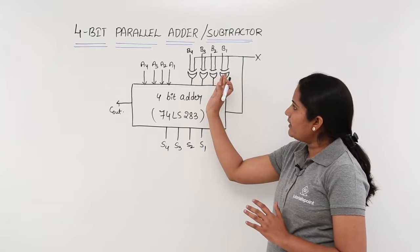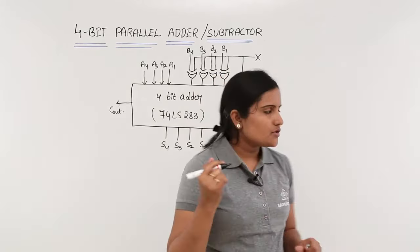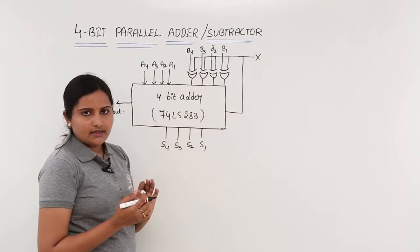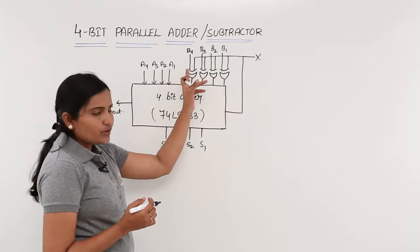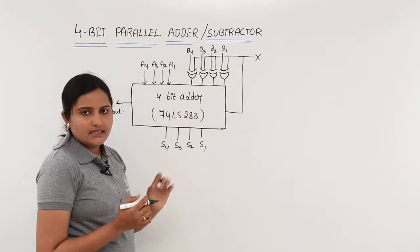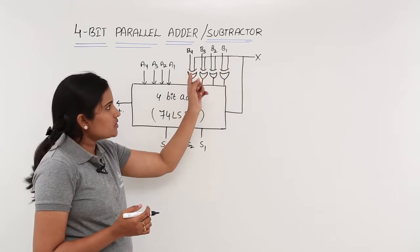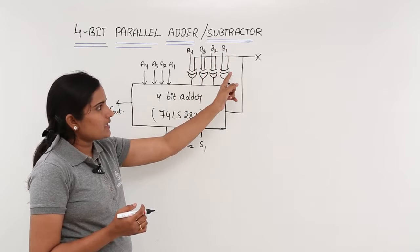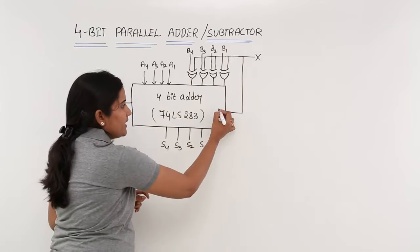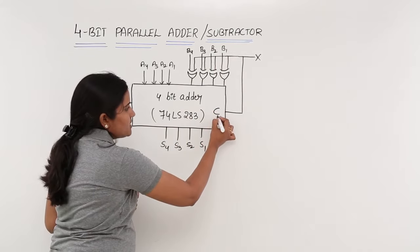Let me explain why we are connecting these XOR gates. These are 2-input XOR gates. One input for each XOR gate is coming from the bits of the second number. The second input for all XOR gates is connected to a common input — the carry-in, which we can call C-in.